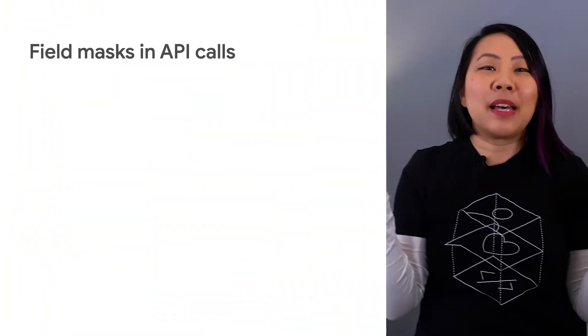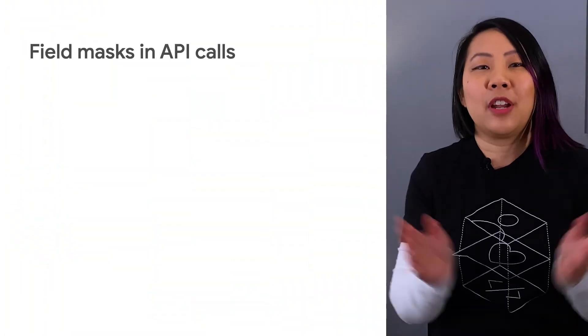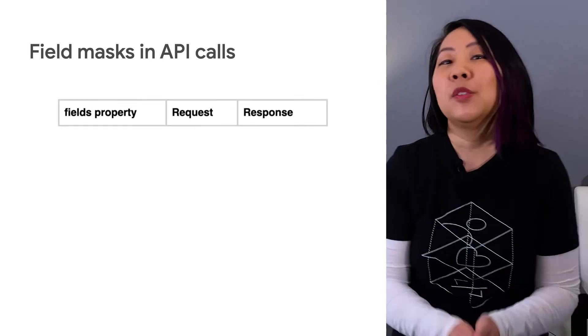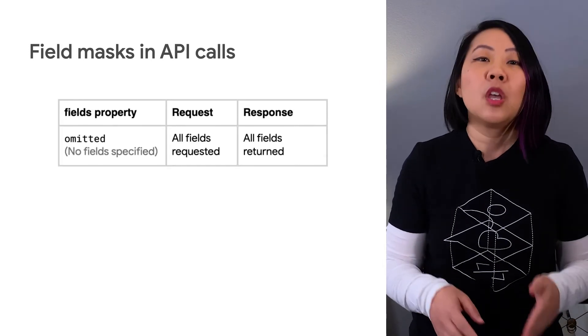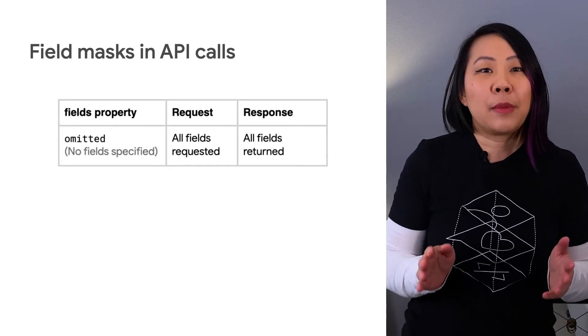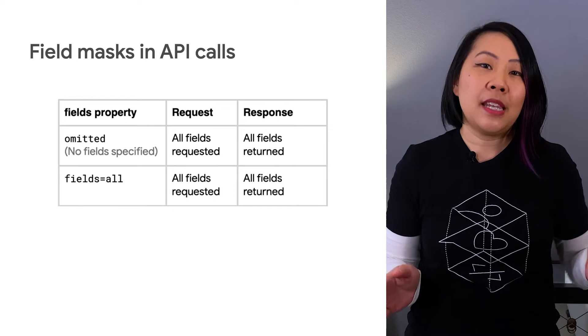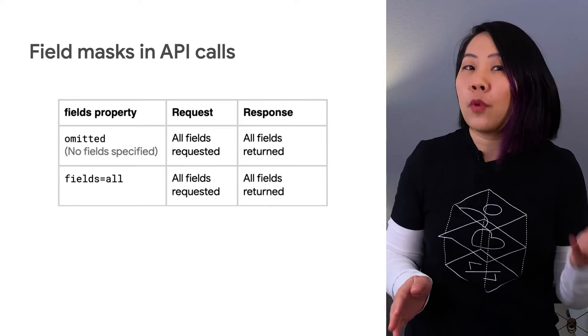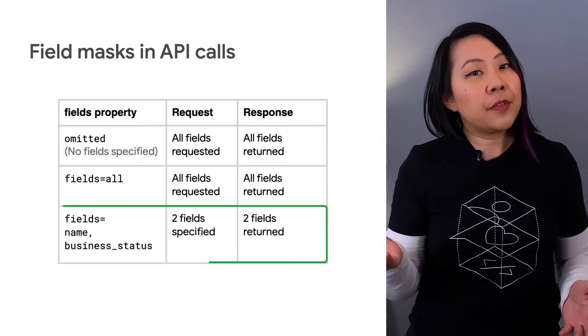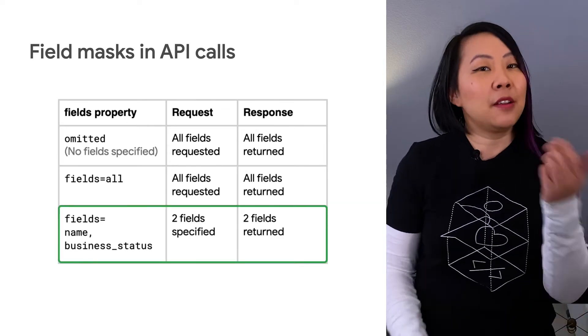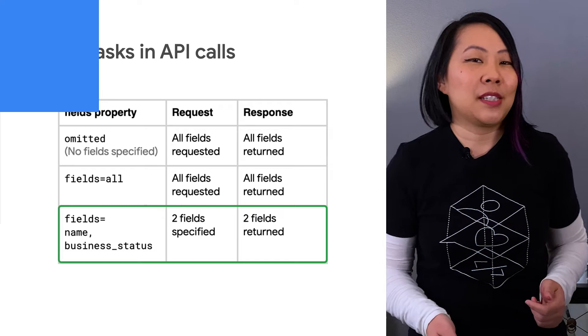Field masks are a way for API callers to list the fields that a request should return. Using field masks allows the API to avoid unnecessary work, improves performance, and reduces your costs.